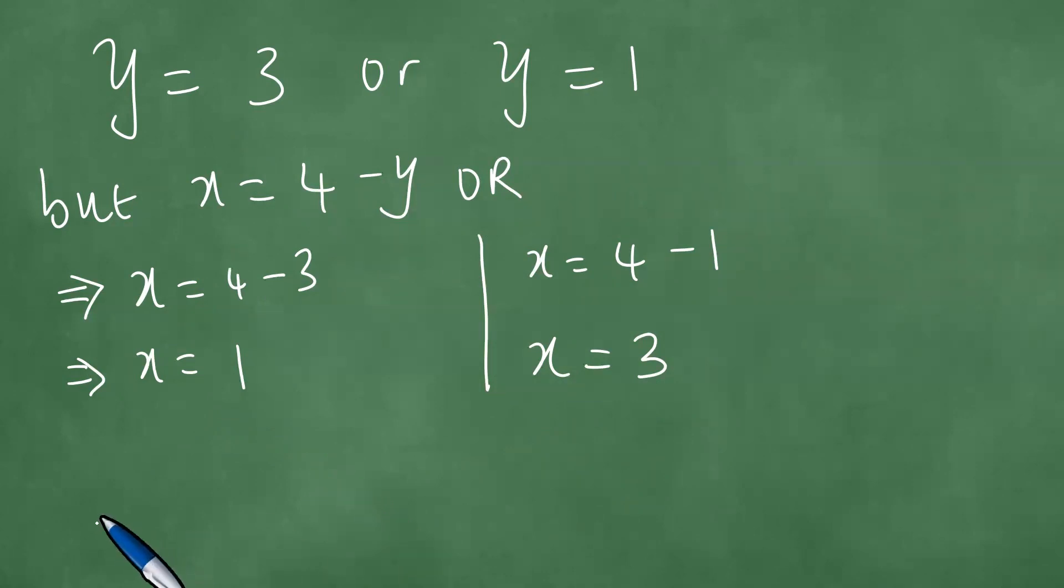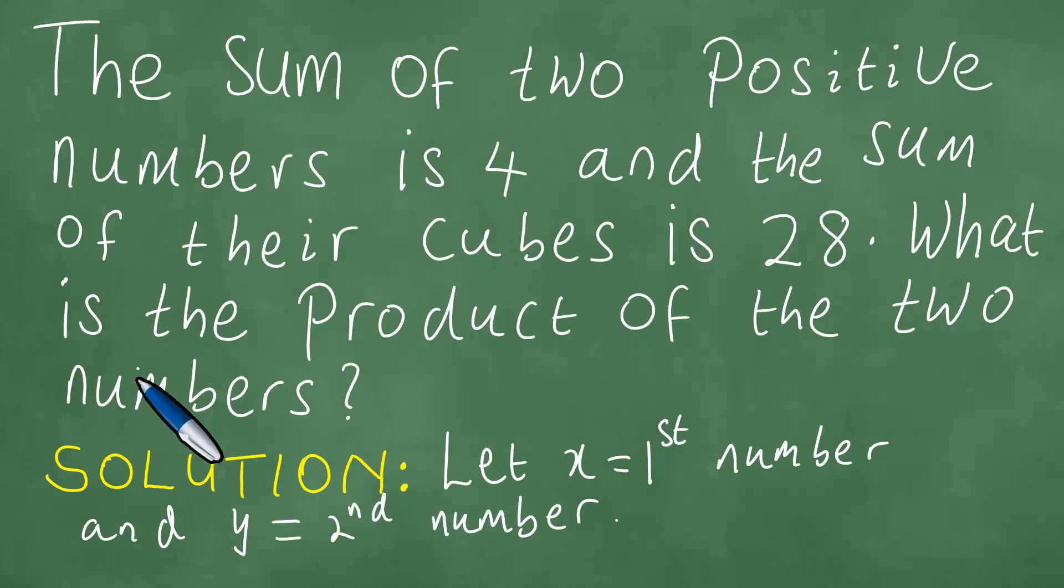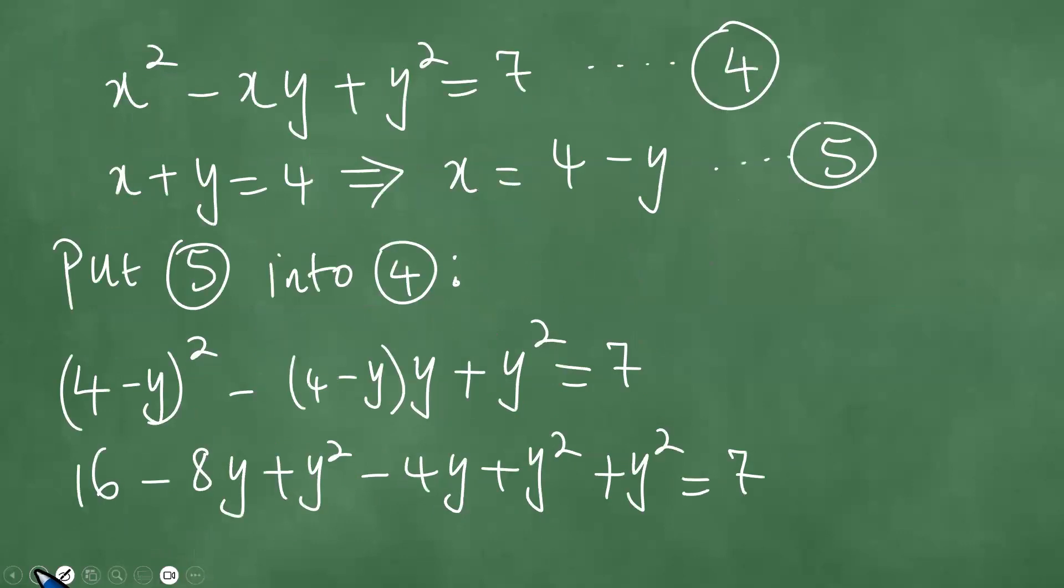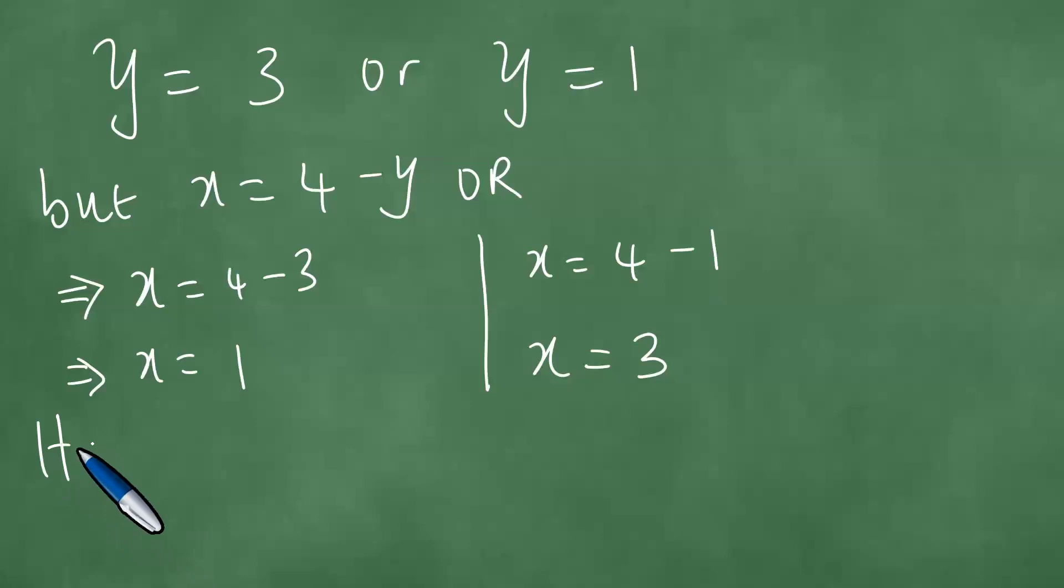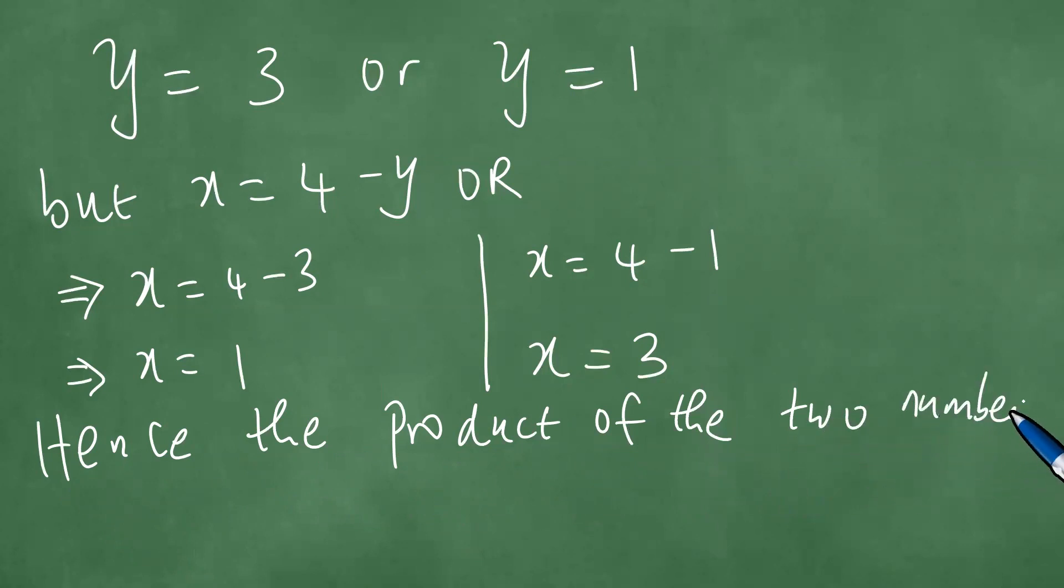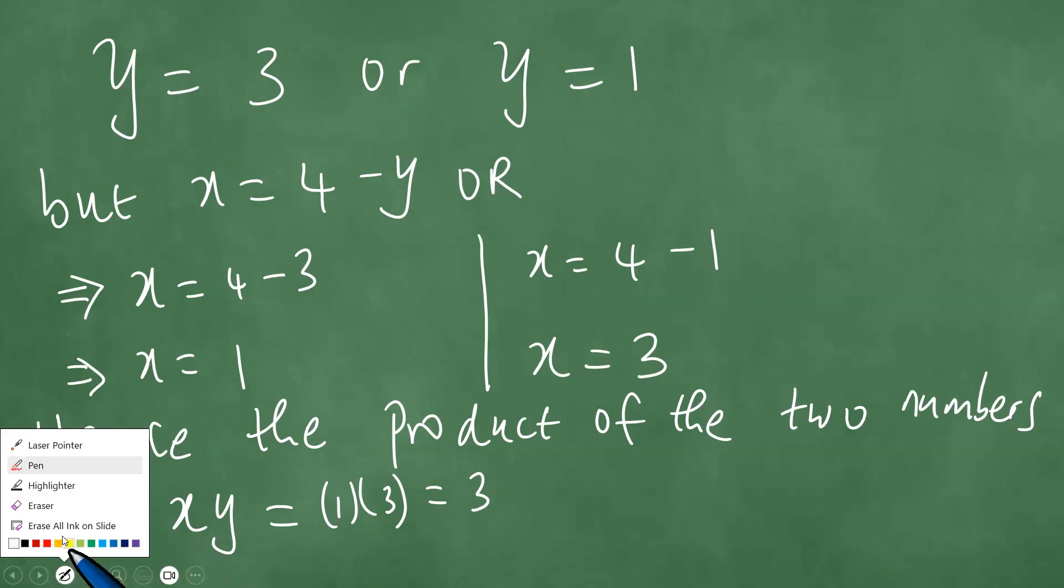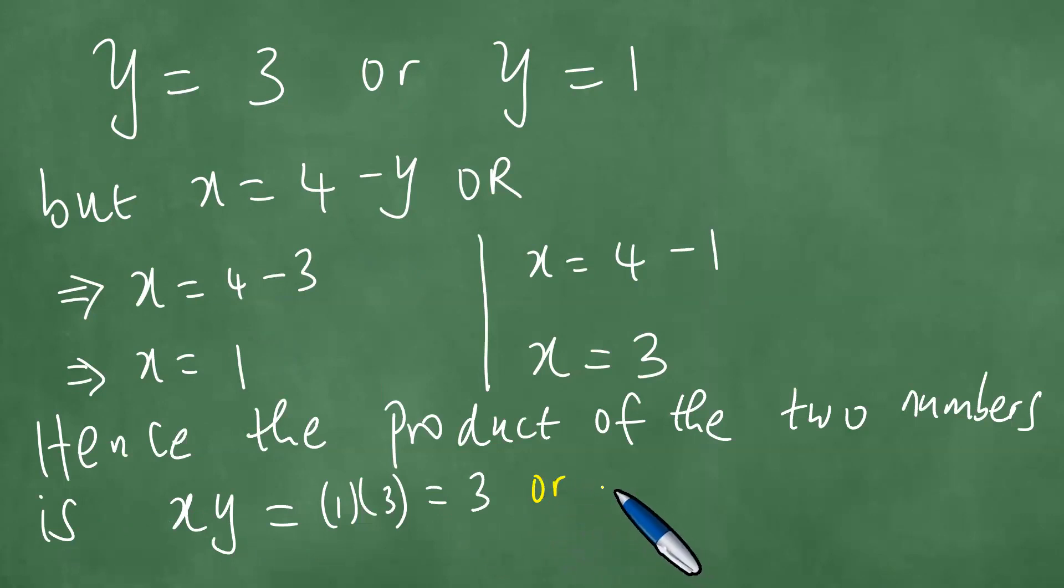So if you had to find the product of the two numbers, because that was the question, what is the product of the two numbers? Hence, the product of the two numbers is xy. So if you put x here and y, 3, so the product is 3. You can also say xy is equal to x here is 3 and the y is 1, and we have xy is 3. Hence, the product of the two numbers is 3.